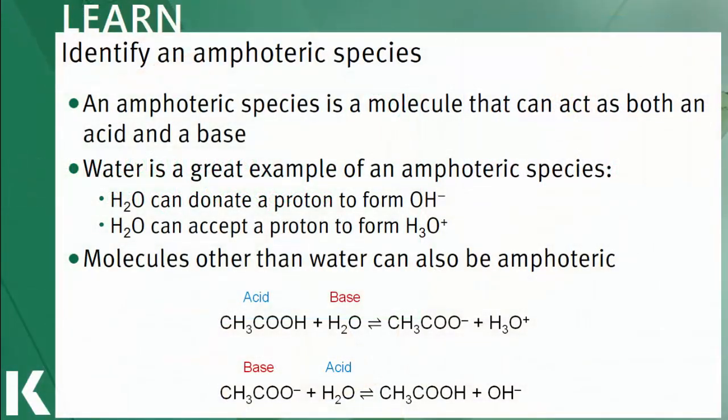Amphoteric comes from the Greek root word amphi meaning two or both. An amphoteric species is one that acts as both an acid and a base.